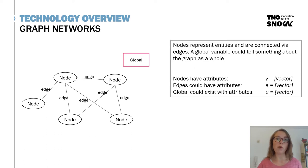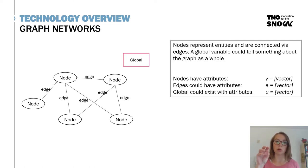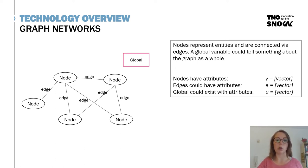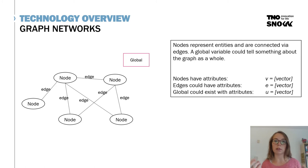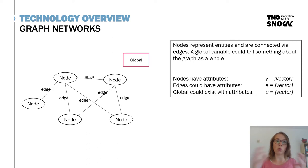You could have a global variable that tells something about the graph as a whole — about the whole system being represented. In this example, you can see nodes, edges, and a global variable. All nodes have a feature vector, an attribute vector telling something about the nodes. Edges can have attributes too — for example, encoding the distance between entities. A global attribute can represent something about the whole graph, though it depends on the type of problem you want to solve.